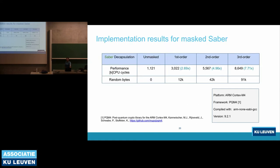These slides present the implementation results for Masked Saber. The first-order masked implementation has an overhead of almost 2.7 times, second-order is 5.5 times, and third-order is 7.7 times. To maintain security, we need random numbers during operations like secure-add and secure-AND on Boolean shares. For first-order, almost 12 KB of random bytes are required. For second-order, about 42 KB, and for third-order, 91 KB.